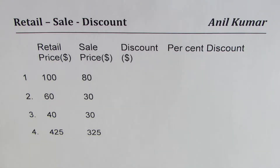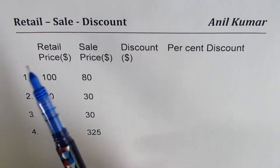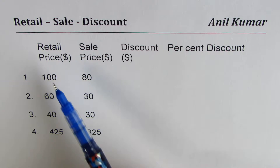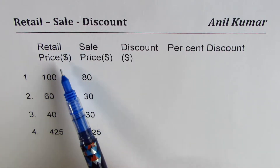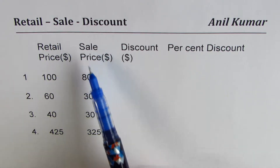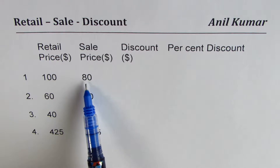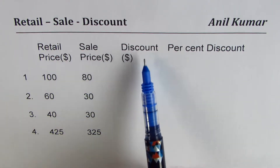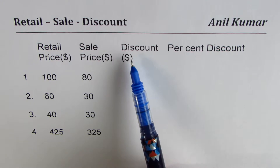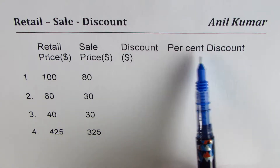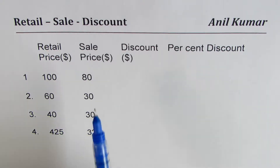I'm Anil Kumar and in this video we will understand the relation between retail price, sale price, and discount. I've made a table here which will help you understand — we'll have four examples. In the first column I've given you the retail price in dollars, in the second column the sale price. The sale price is lesser than the retail price because there is some discount on it, so we'll figure out what the discount is, and then find the percent discount.